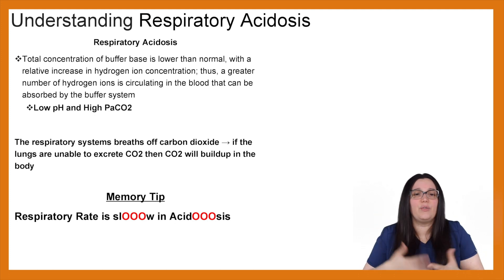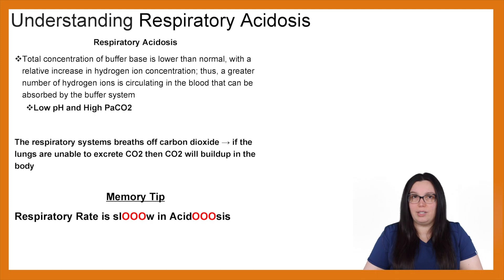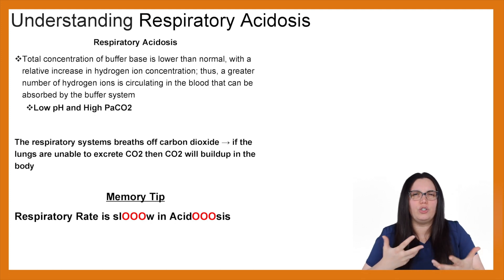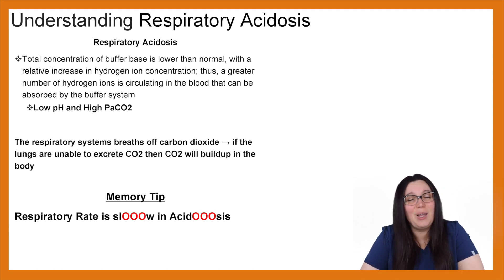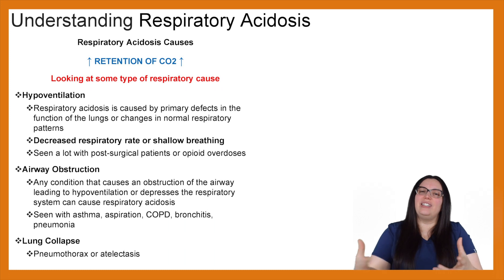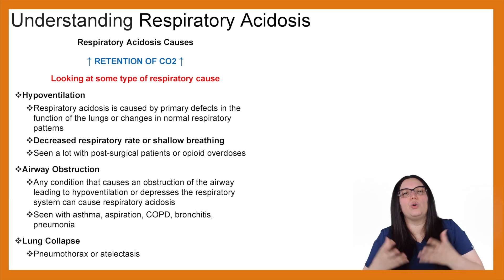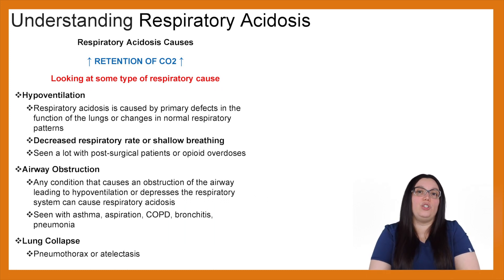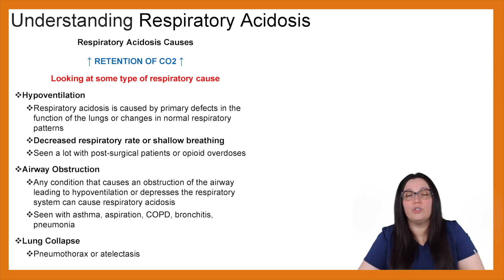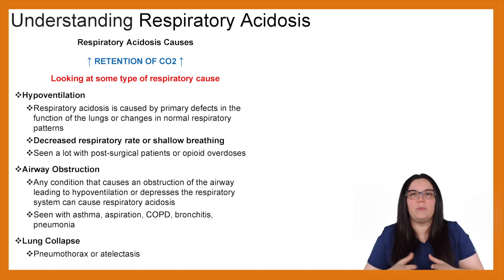A good memory trick to help you remember this for your exams: respiratory rate is slow in respiratory acidosis — we're having respiratory depression. That helps you figure out what the cause is and what you might see. So with respiratory acidosis you're going to have retention of CO2, and we're looking for some type of respiratory cause. Hypoventilation, like with our post-surgical patient, is where respiratory acidosis is caused by primary defects in lung function or changes in normal respiratory pattern.